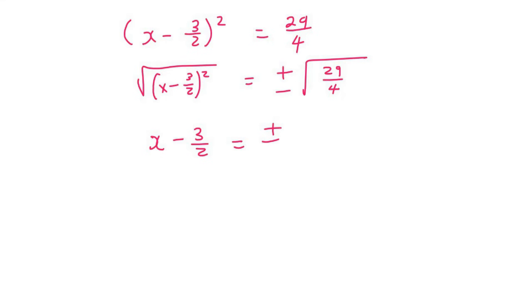And on the right hand side, we're still left with plus minus square root of 29 over 4. 29 over 4 is not a nice number, so I'm just leaving it like that for now. Then to get my two answers, I can take the 3 over 2 over. So we're going to end up with this like that.